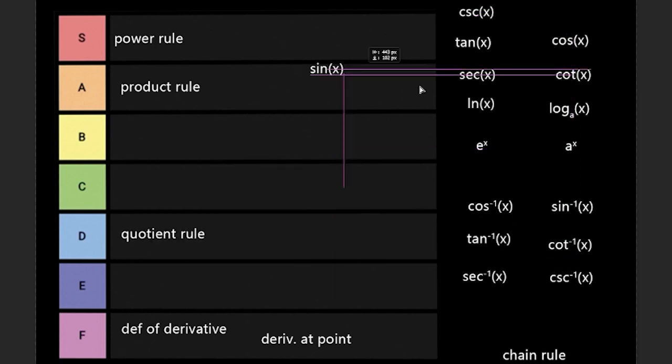Next is sine of x. Sine of x is just cos of x. I give this one a B. It's pretty simple and straightforward. Same goes with cos of x. Cos of x goes behind sine of x because it's negative because it's just negative sine of x.